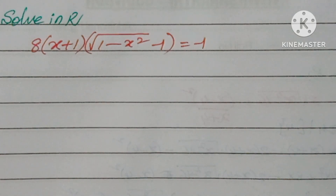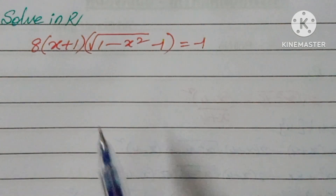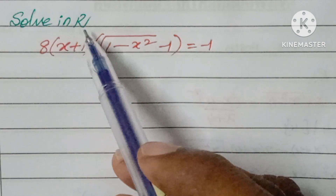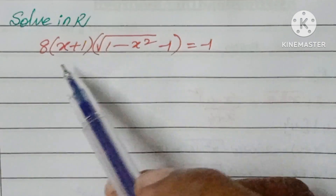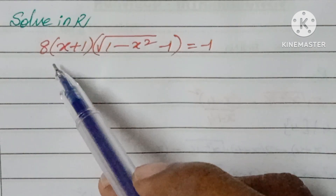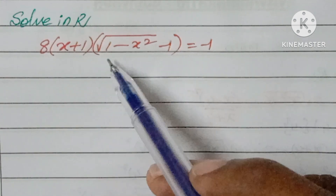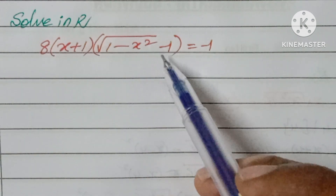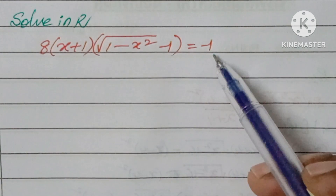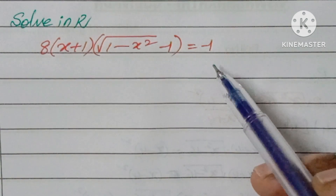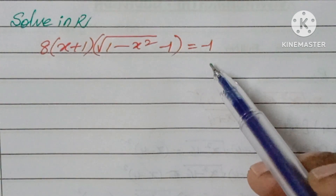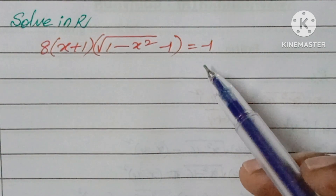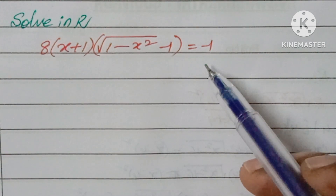Hello, welcome back to Ian's Easy Math. Today we are looking at one logical problem. The equation is: 8 into (x+1) into square root of (1 minus x squared) minus 1, equal to minus 1. Let us pause the video for 10 seconds and try it.